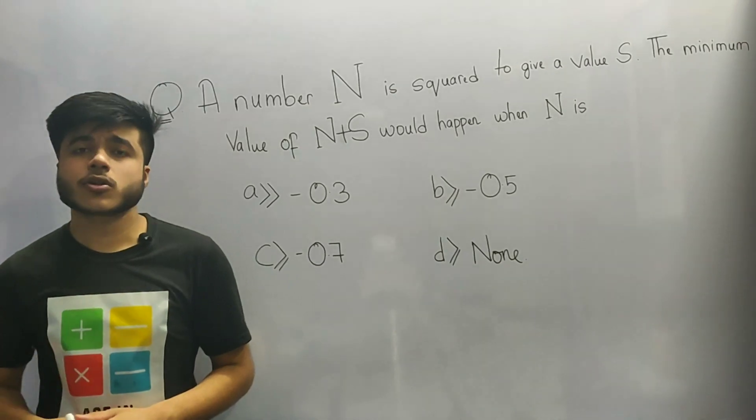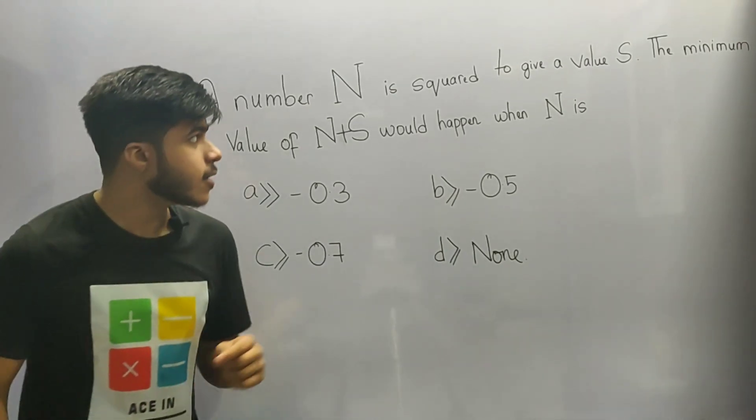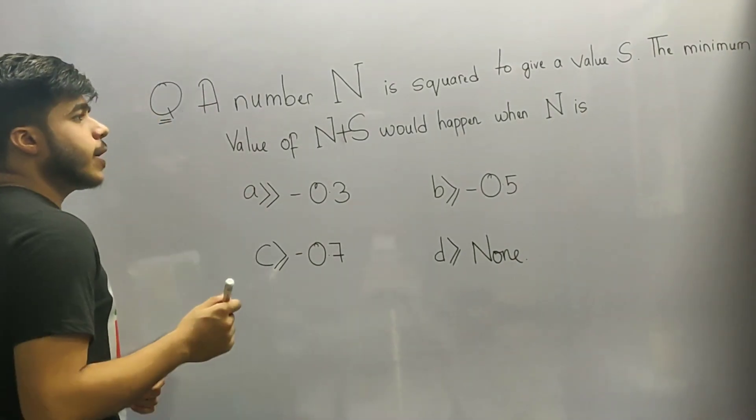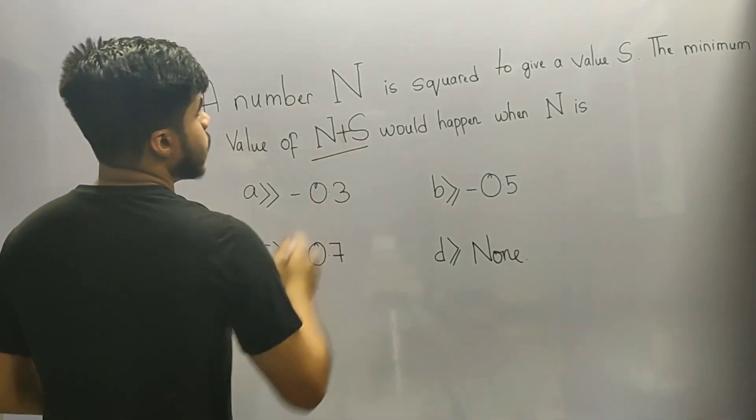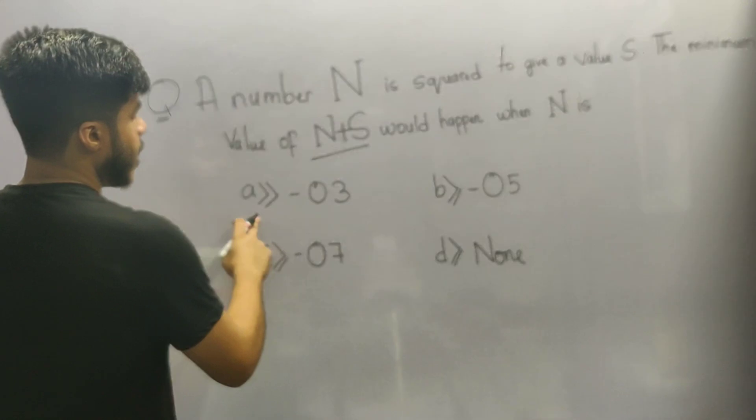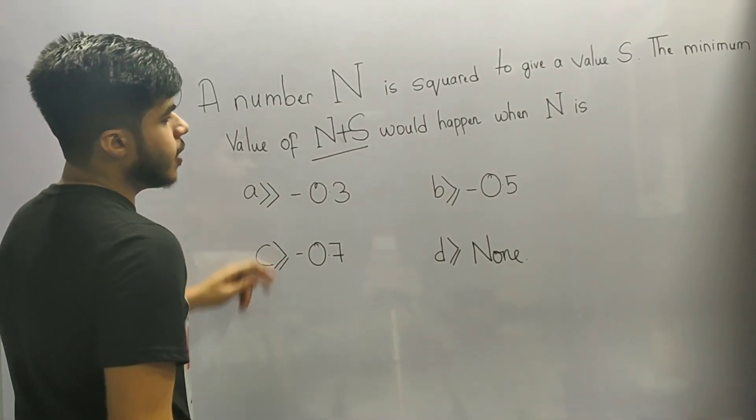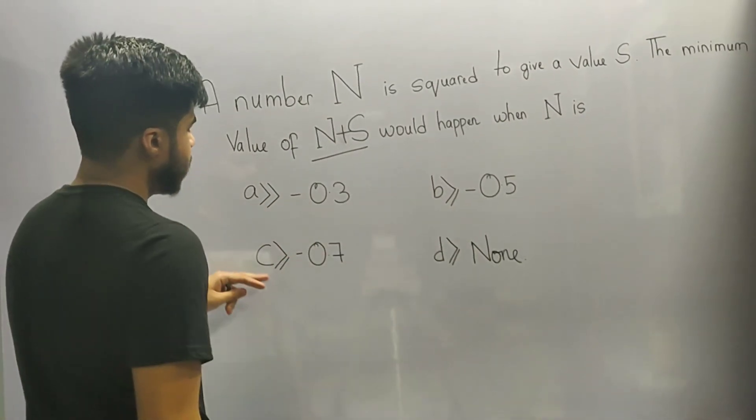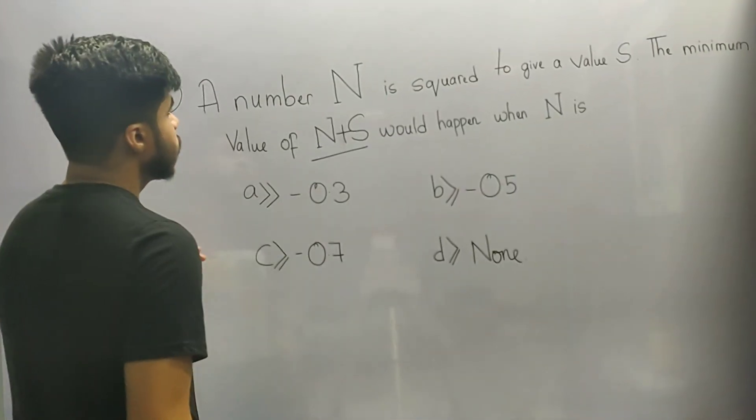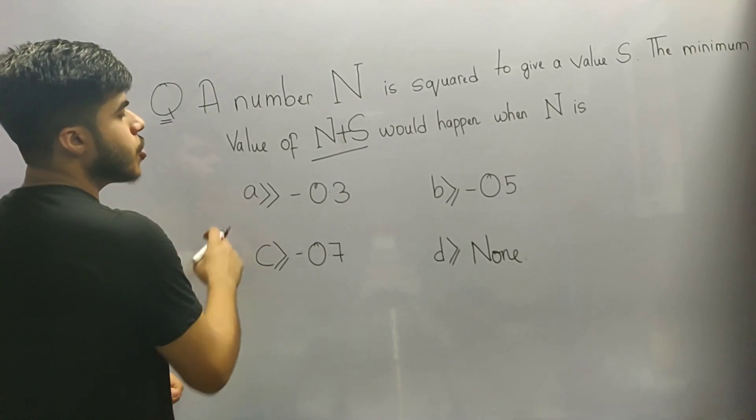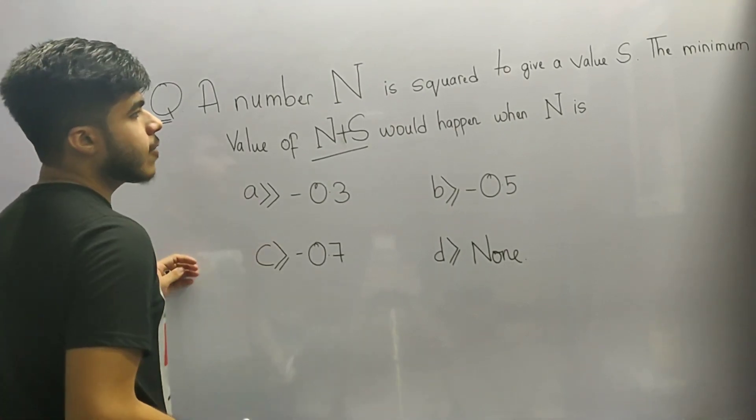As you can see the question is on the board and the question says that if a number n is squared to give a value s, then the minimum value of n plus s would happen when n is, and we are given four options: a) minus 0.3, b) minus 0.5, c) minus 0.7, and d) none of the values. I would like you to first solve the question by yourself and then come back for the solution.